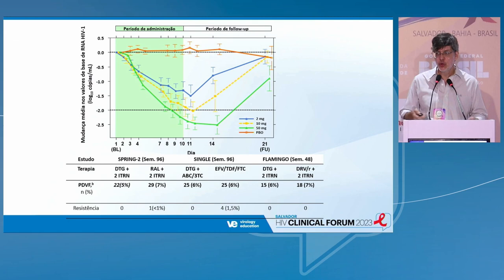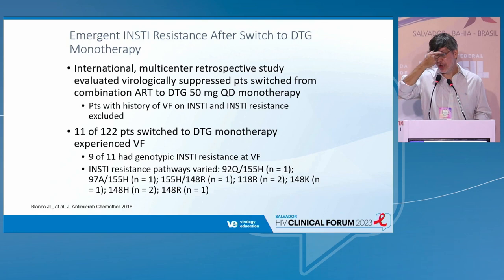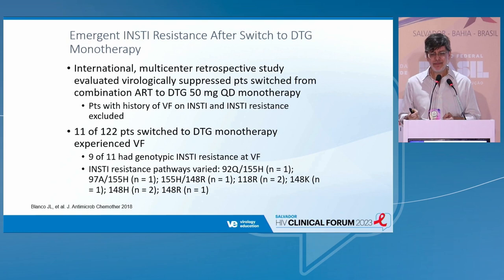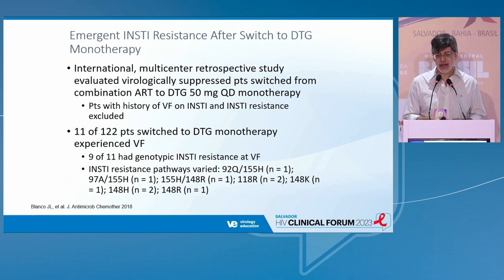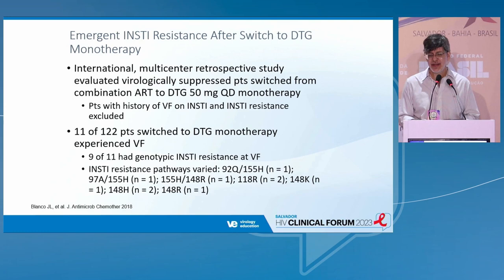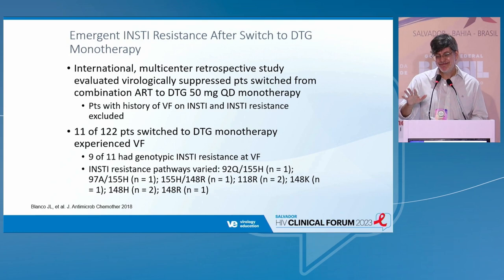It is possible that dolutegravir would not demand a large number of other drugs to create powerful regimens. Some researchers were so excited they decided to try monotherapy — and then things didn't work so well. This was the Blanco study from Spain. Patients without a history of integrase inhibitor failure, already suppressed, were switched to dolutegravir monotherapy. The study was associated with early failure: in six months, 10% of patients had virological failure with resistance to integrase. So everyone stepped on the brakes with regards to monotherapy.